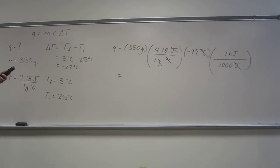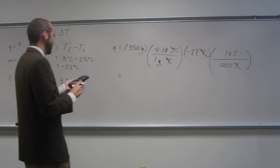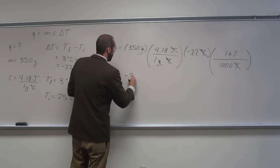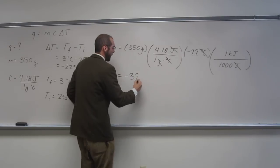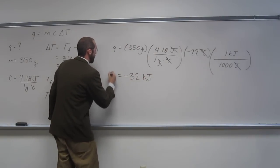So, 350 times 4.18, times negative 22, divided by 1,000. And this should be to two sig figs. Is that right, everyone? Is that what you guys got? So I got negative 32 kilojoules is the heat transfer.